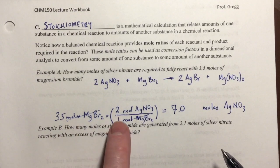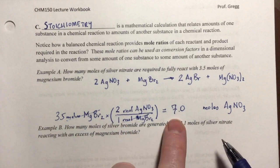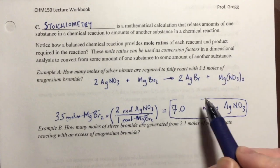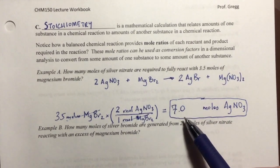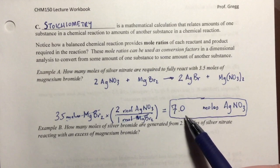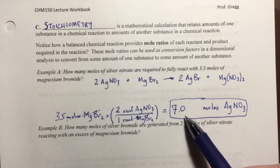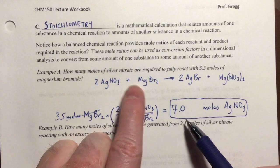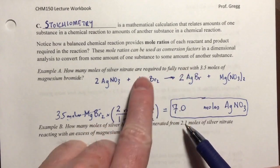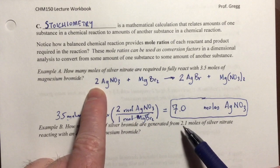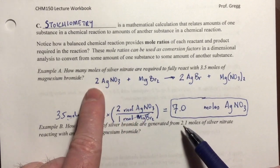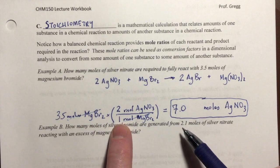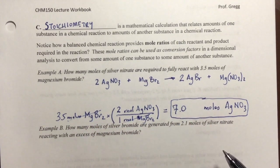Two sig figs — the 3.5 has two sig figs, and the coefficients are exact numbers — so my answer is 7.0 moles of silver nitrate. This confirms what we got mentally: it's a 1-to-2 ratio, so 3.5 moles of magnesium bromide requires twice as many, which is 7 moles of silver nitrate. That's how we set up the math formally.